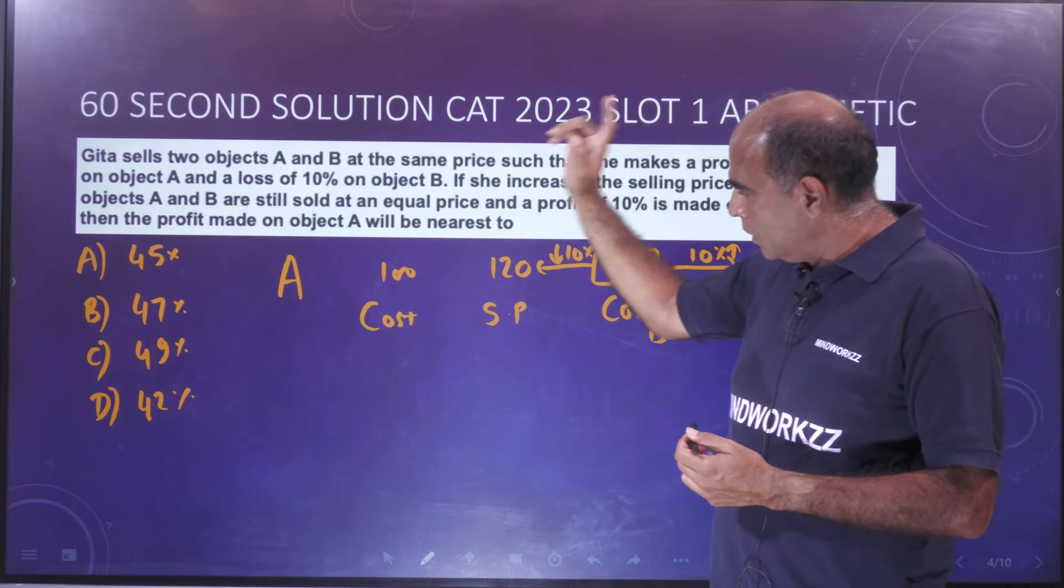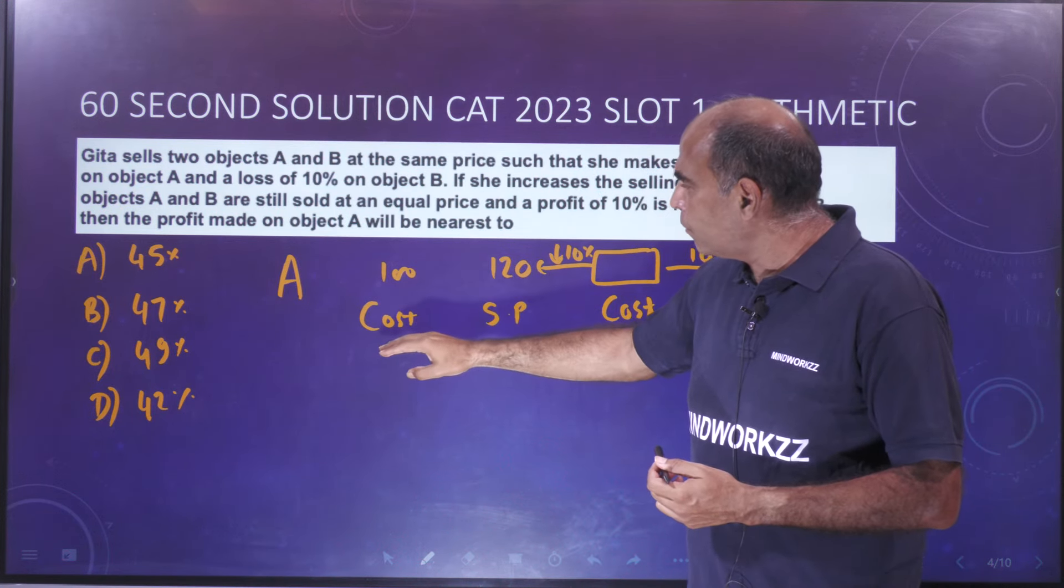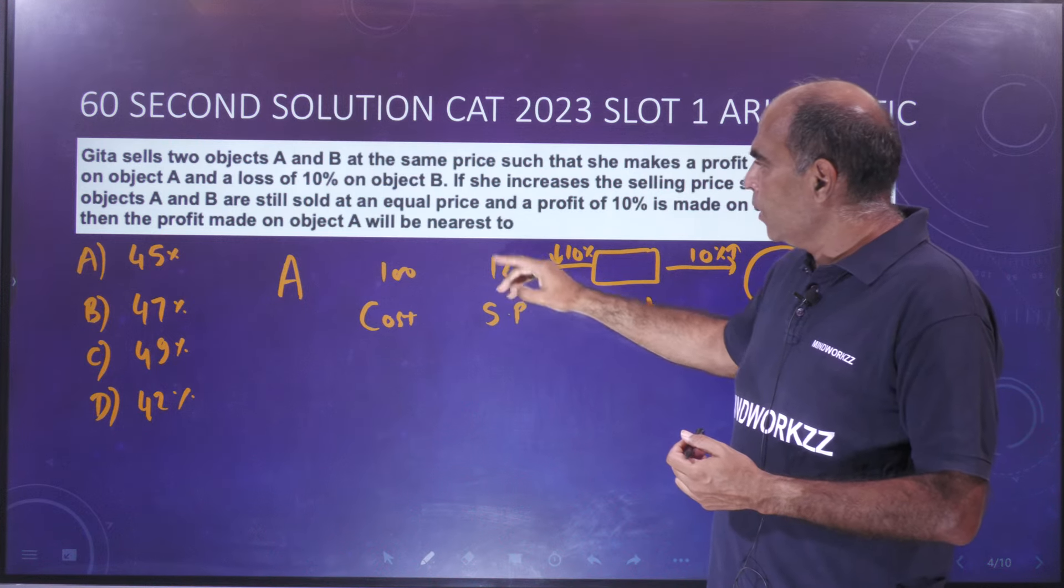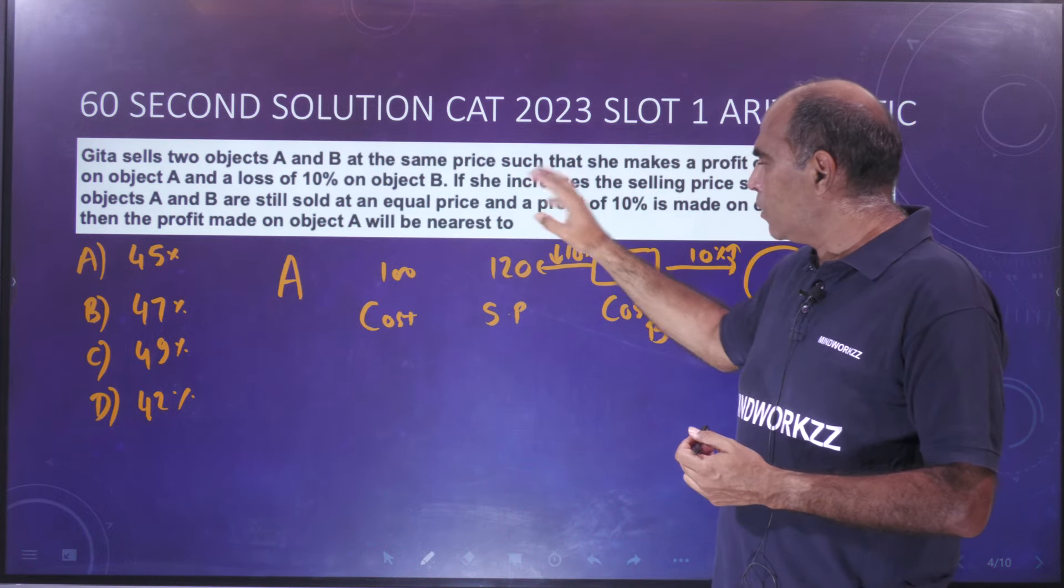This is the first trigger. So if I take the cost of A as 100, the selling price of A is 120, and a loss of 10% on object B.